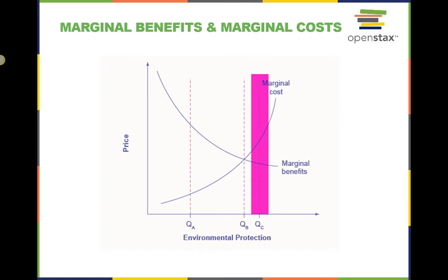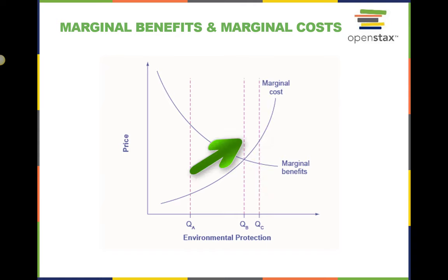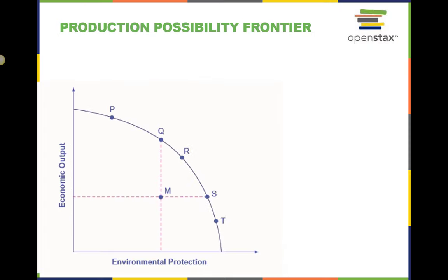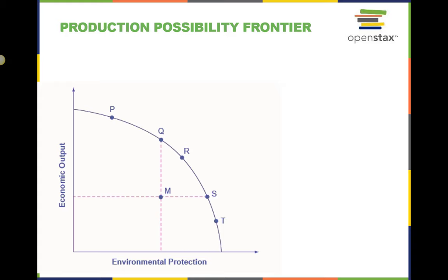Reducing pollution is costly. Resources must be sacrificed. The marginal costs of reducing pollution are generally increasing, because the least expensive and easiest reductions can be made first, leaving the more expensive methods for later. The marginal benefits for reducing pollution are generally declining, because the steps that provide the greatest benefit can be taken first, and the steps that provide the least benefit can wait until later. This is a production possibilities frontier, which shows the trade-offs of a society who either chooses to maintain economic output on the vertical axis, or protect its environment on the horizontal axis.